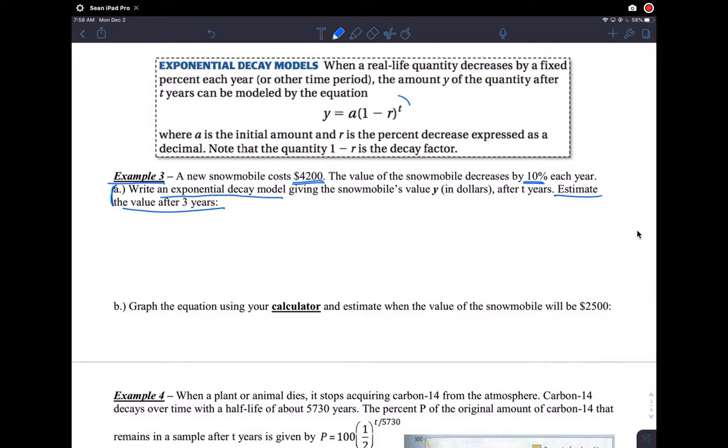Before we go there, so we can write down the model from here. Let's write it down. Y equals A times 1 minus R to the T. So that tells us that this is a good model to show how the value of the snowmobile will decrease.